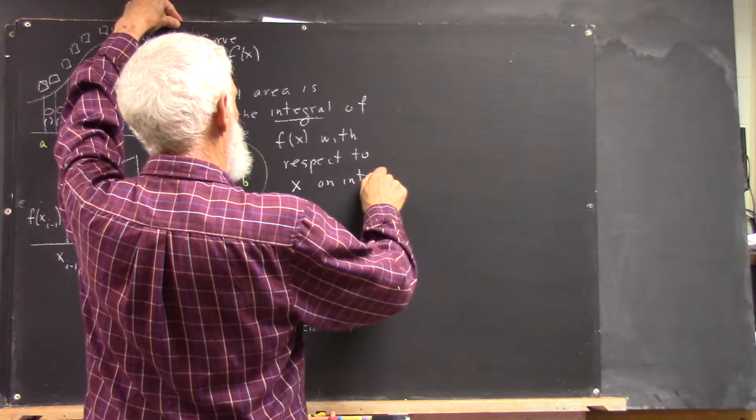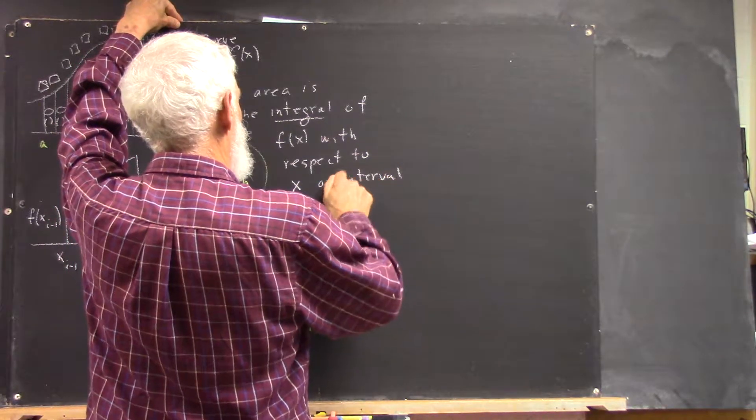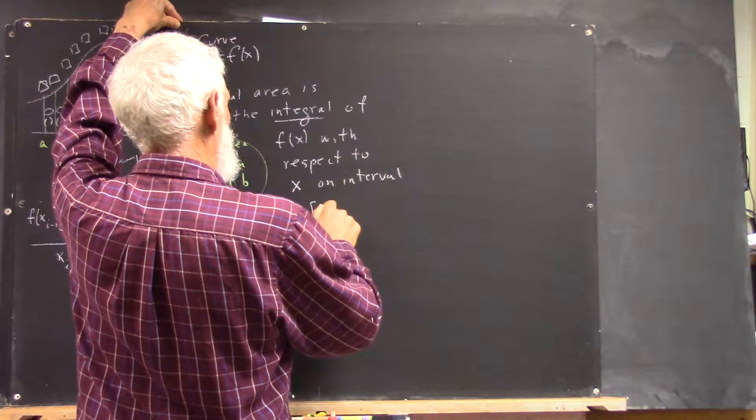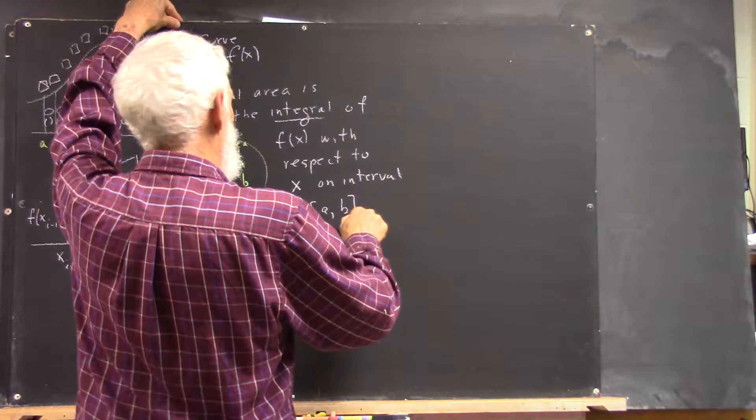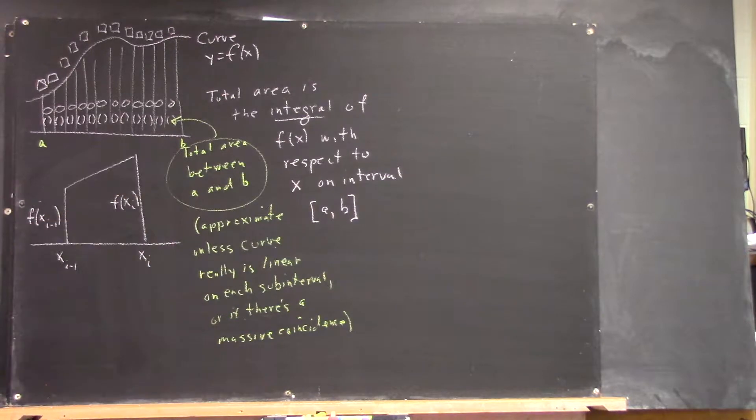On the interval [a, b], this is a and this is b.